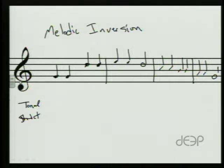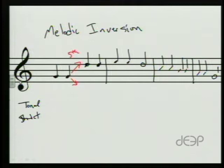Basically a melodic inversion is when you start on the same note and rather than going up the interval, we're going to go the opposite direction. So we would find that interval and we would say okay, that's a fifth. So rather than going up a fifth, we're going to go down a fifth. So the next two notes would be a fifth below the G, or two Cs.